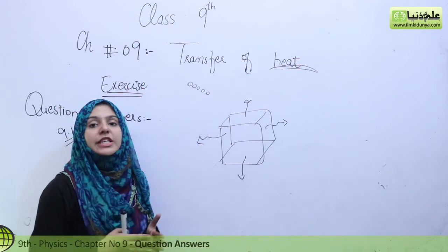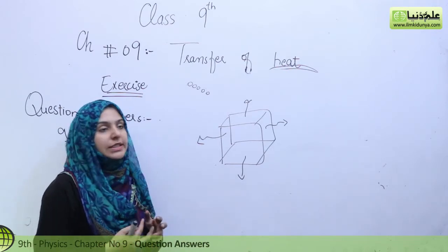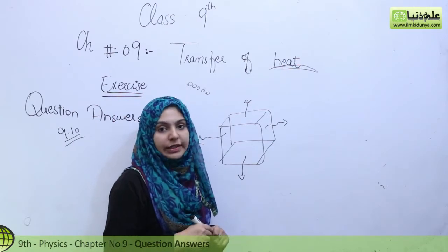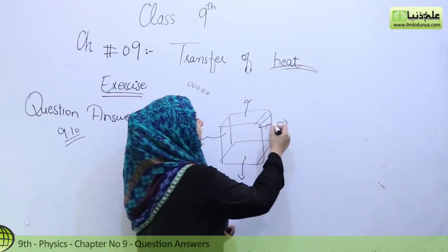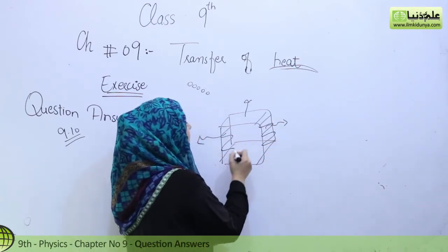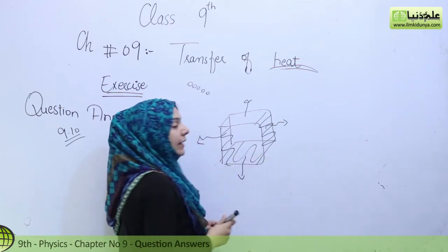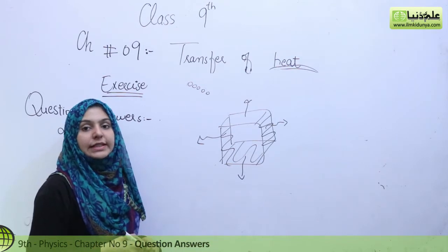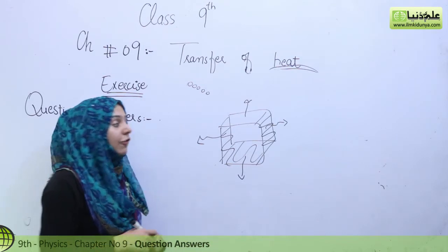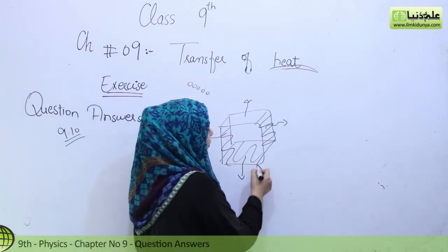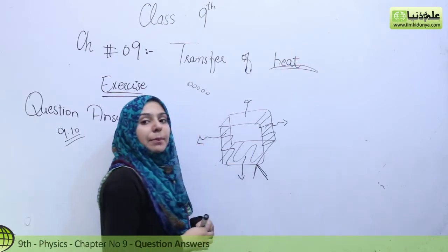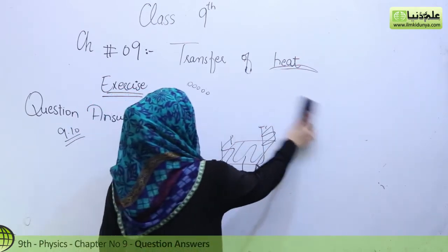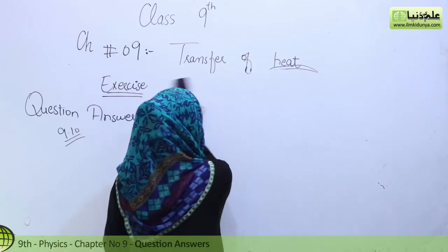The Leslie cube tells us that we coat the four surfaces of the cube with different colors. By coating them with different colors, the rate at which each surface can emit, absorb, or reflect radiation becomes different. This is how we compare different things using the Leslie cube — to see how they differ from one another.